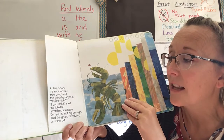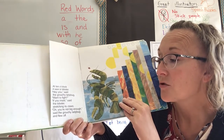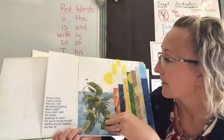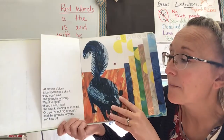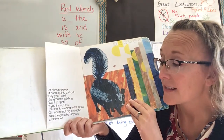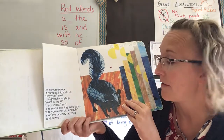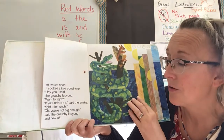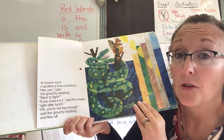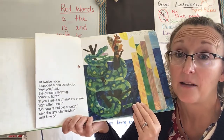At ten o'clock, it saw a lobster. "Hey you," said the grouchy ladybug. "Want to fight?" "If you insist," said the lobster, stretching its claws. "Oh, you're not big enough," said the grouchy ladybug and flew off. At eleven o'clock, it bumped into a skunk. "Hey you, want to fight?" "If you insist," said the skunk, starting to lift its tail. "Oh, you're not big enough," said the grouchy ladybug and flew off. At twelve noon, it spotted a boa constrictor. "Hey you, want to fight?" "If you insist," said the snake, right after lunch. "Oh, you're not big enough," said the grouchy ladybug and flew off. Looks like he's getting ready to eat that squirrel — if he's going to eat a squirrel, I don't think the ladybug stands a chance.